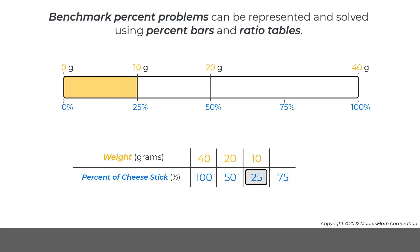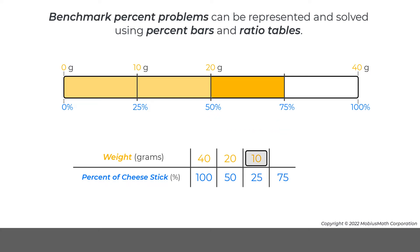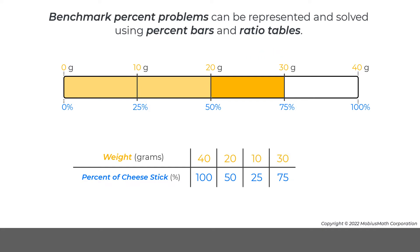Finally, if 25% is added to 50% to get 75%, then 10 grams can be added to 20 grams to get 30 grams. So, 75% of 40 grams is 30 grams.